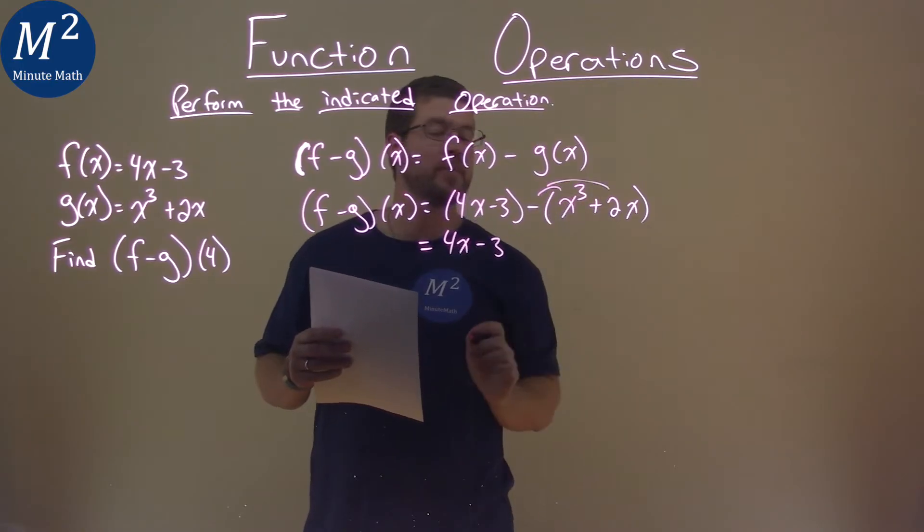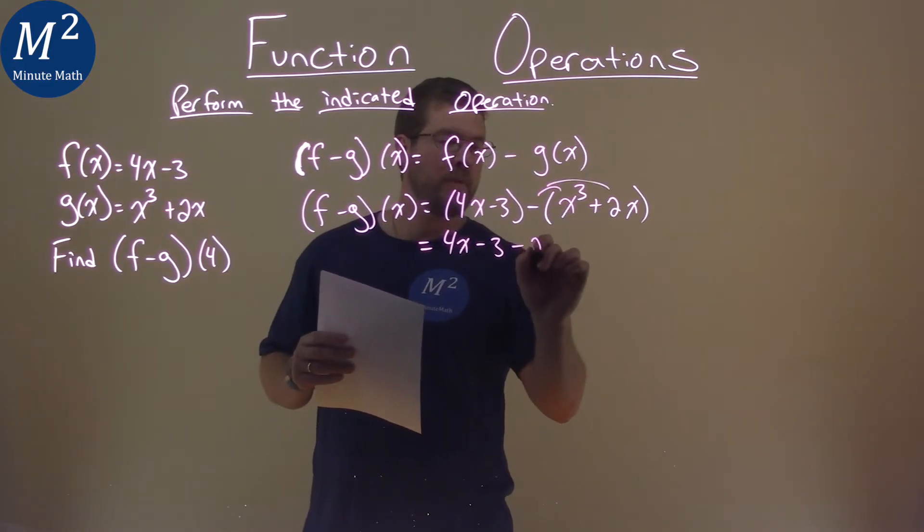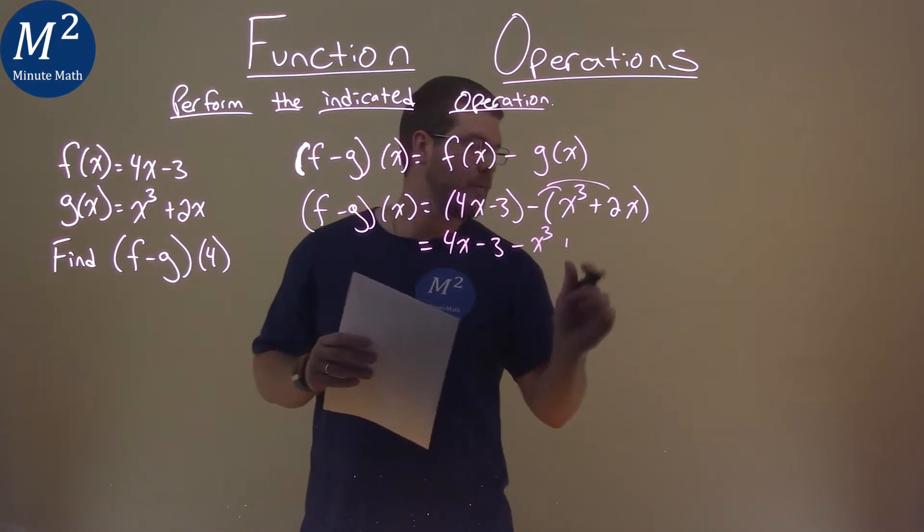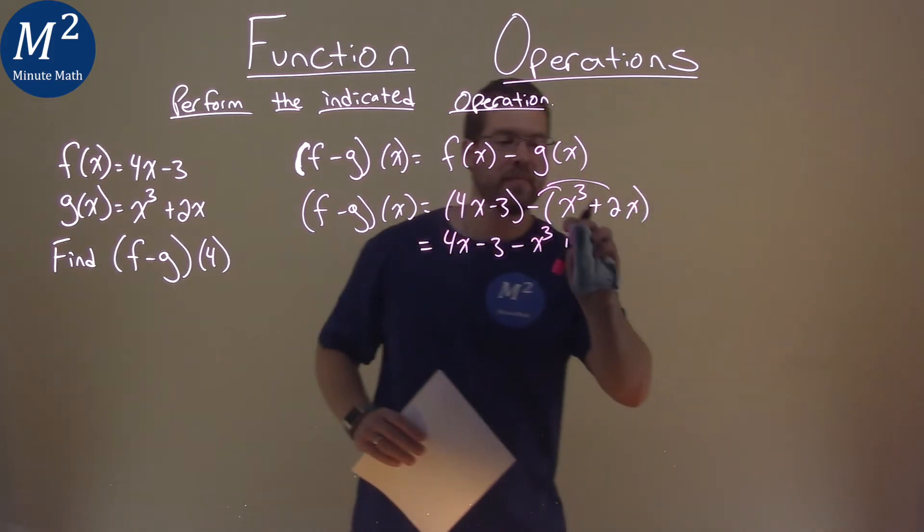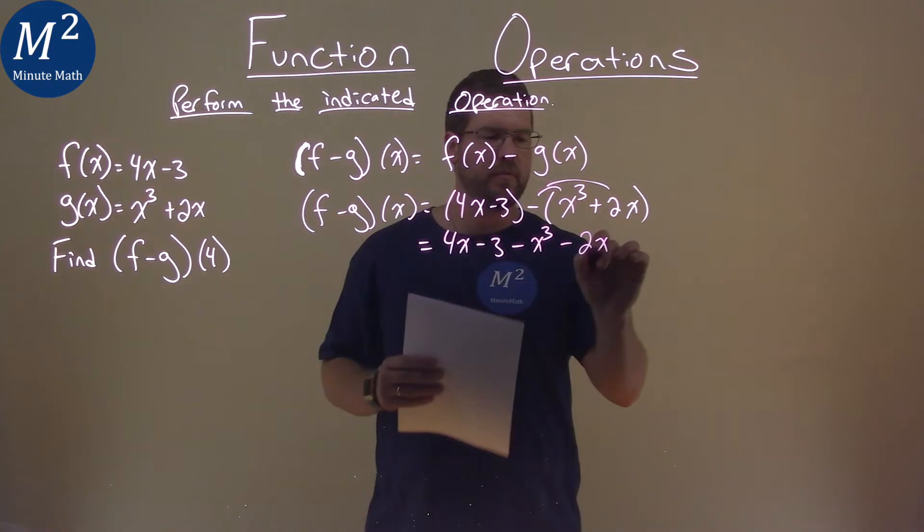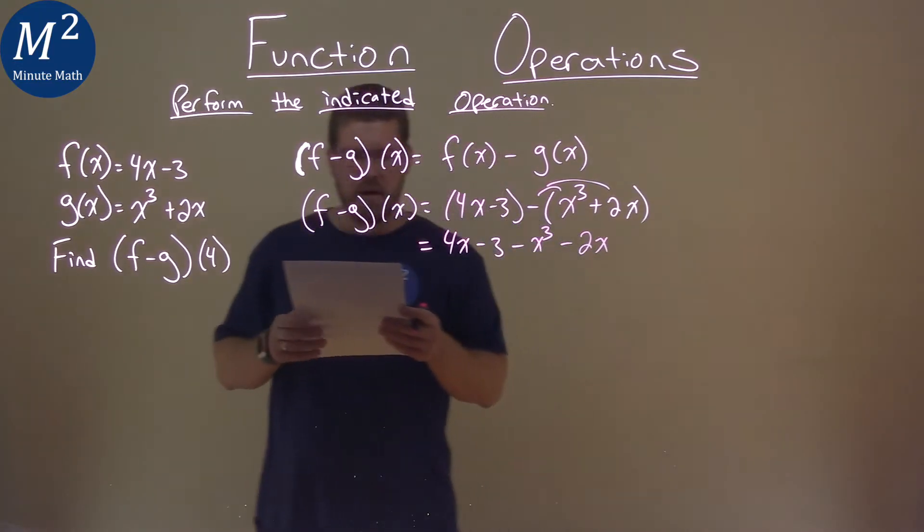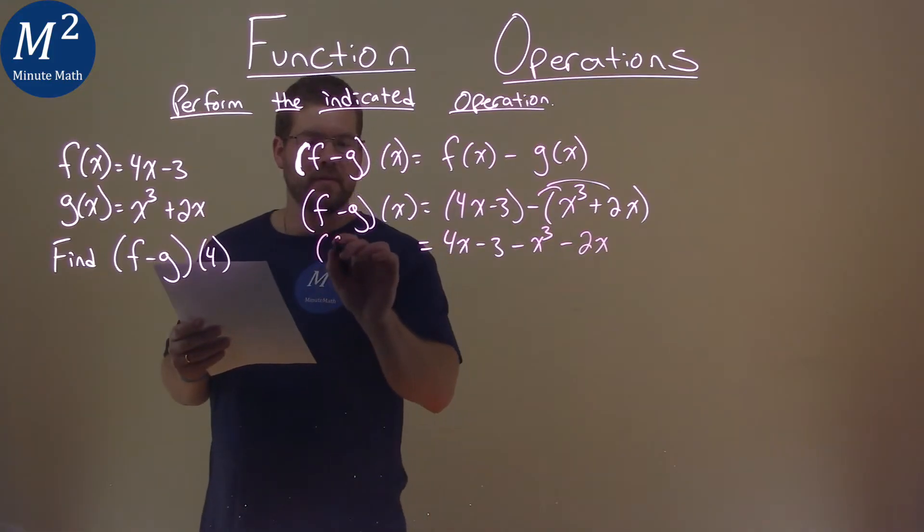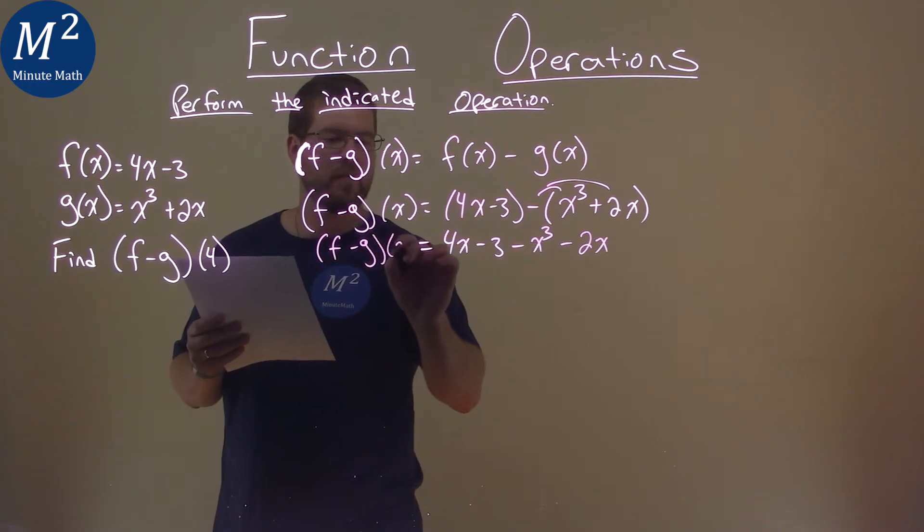So we have minus x cubed, and then—oh, not plus, be careful here—minus 2x, or plus a negative, however you prefer to see it. That is (f - g)(x).